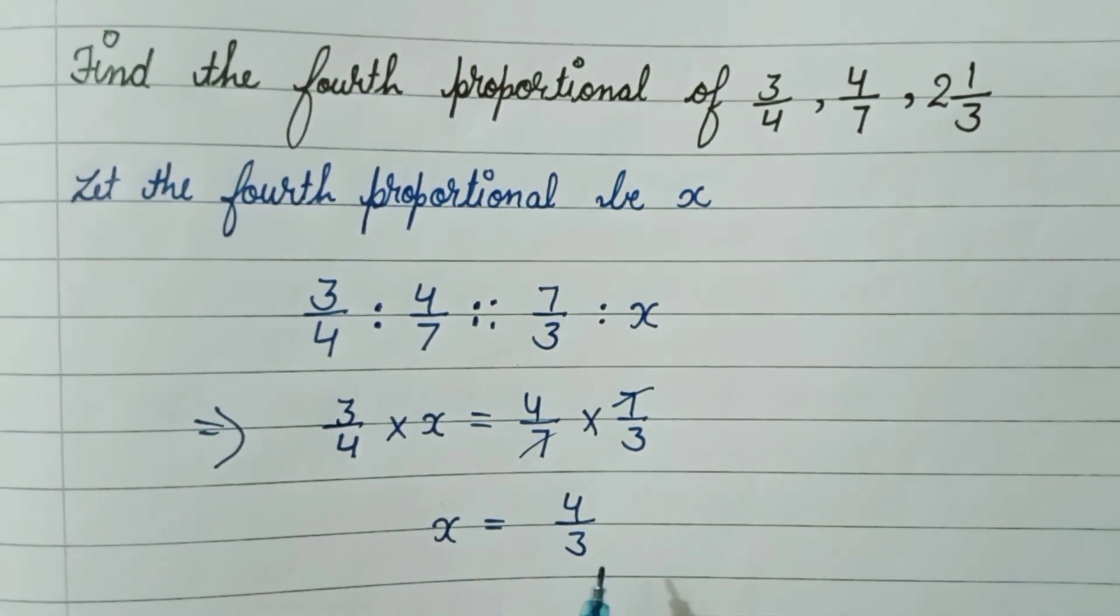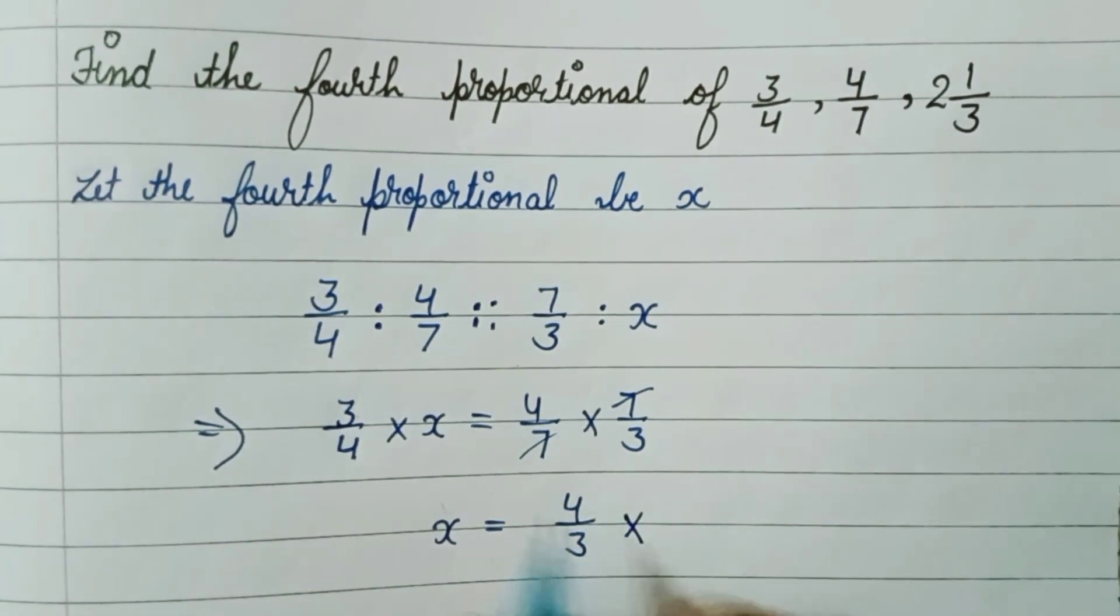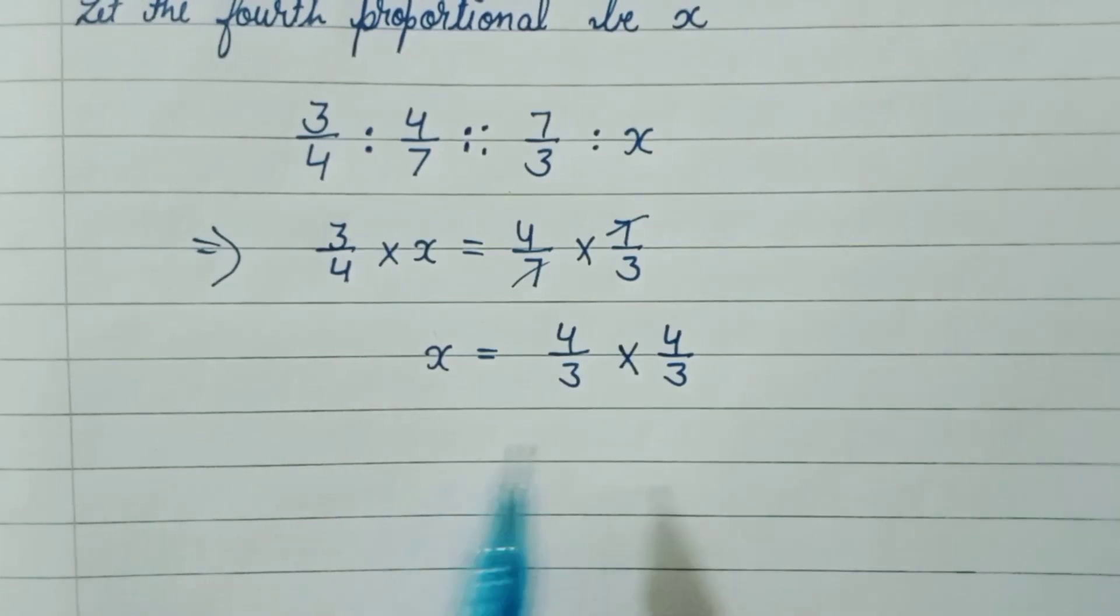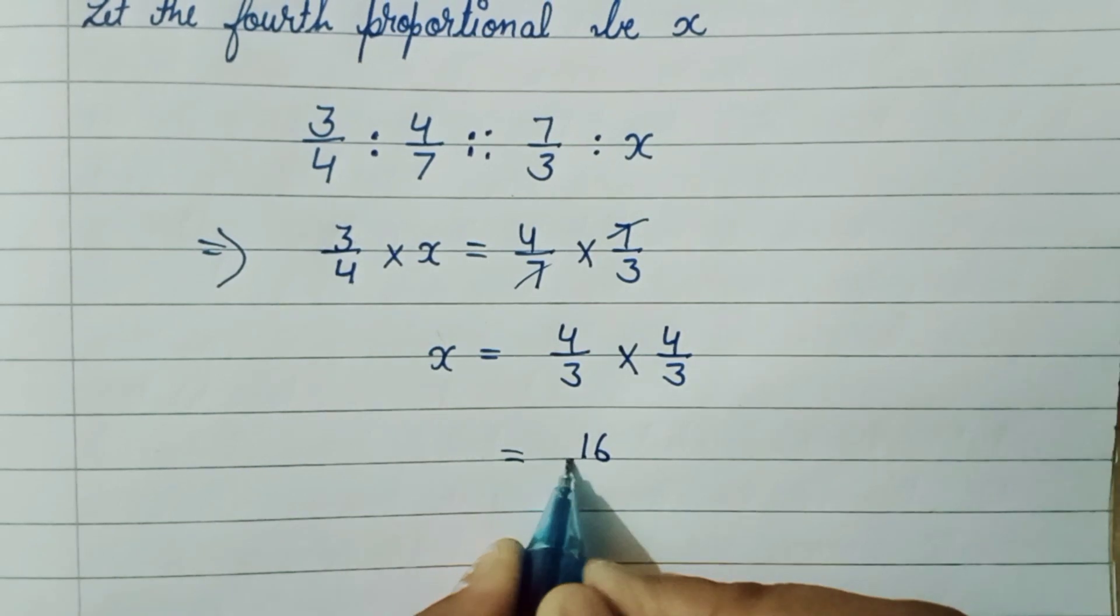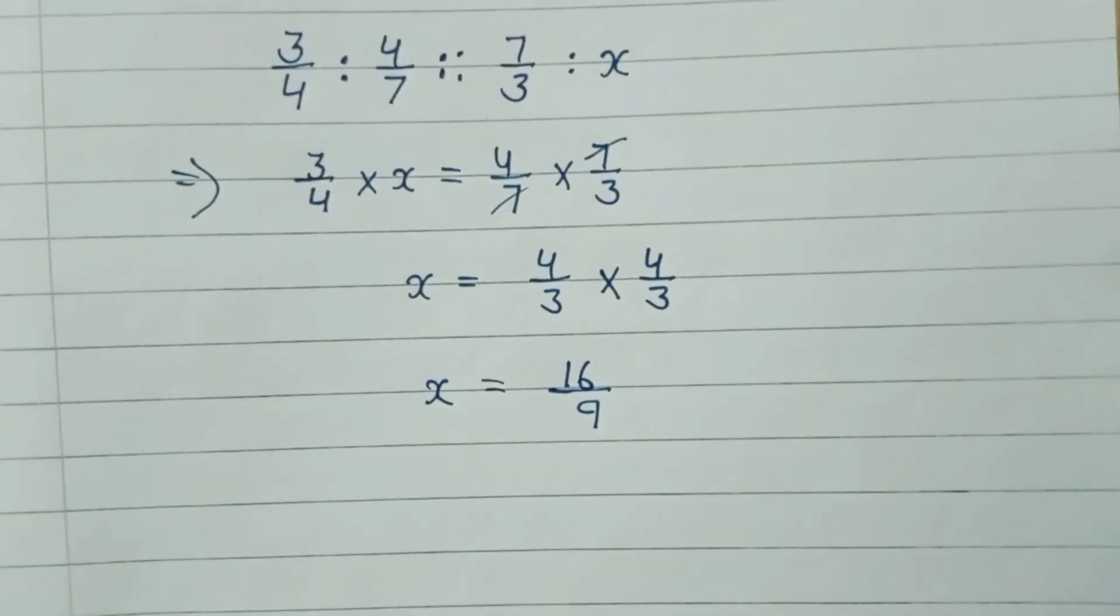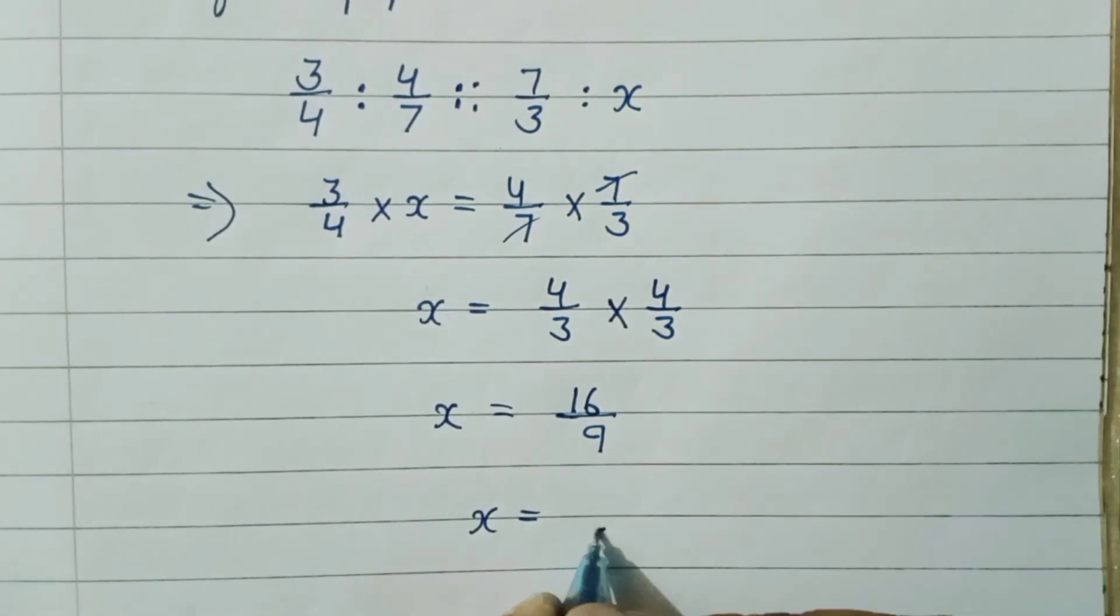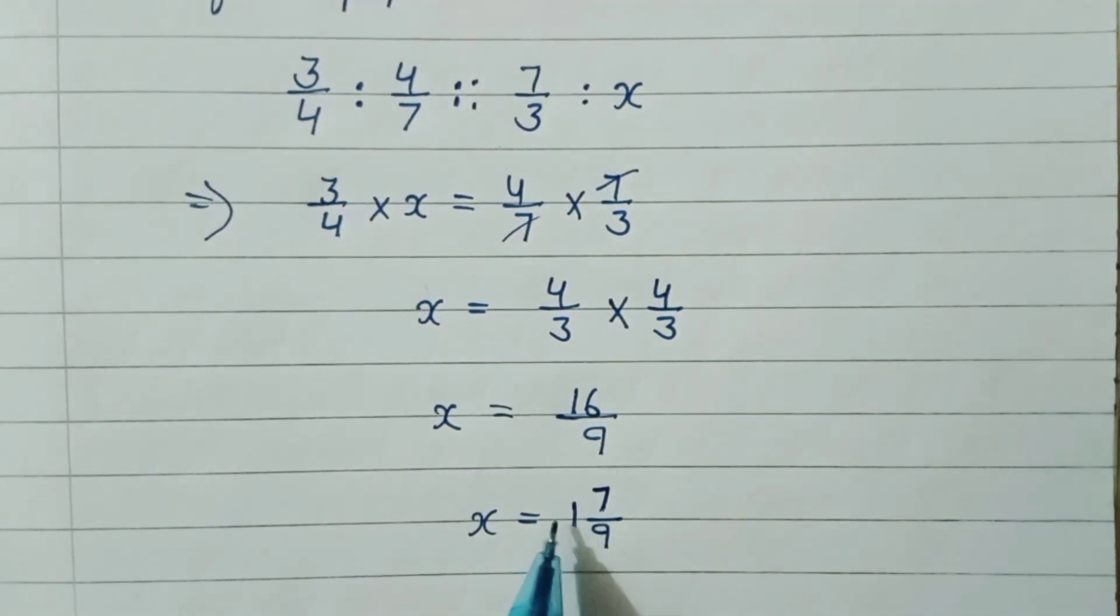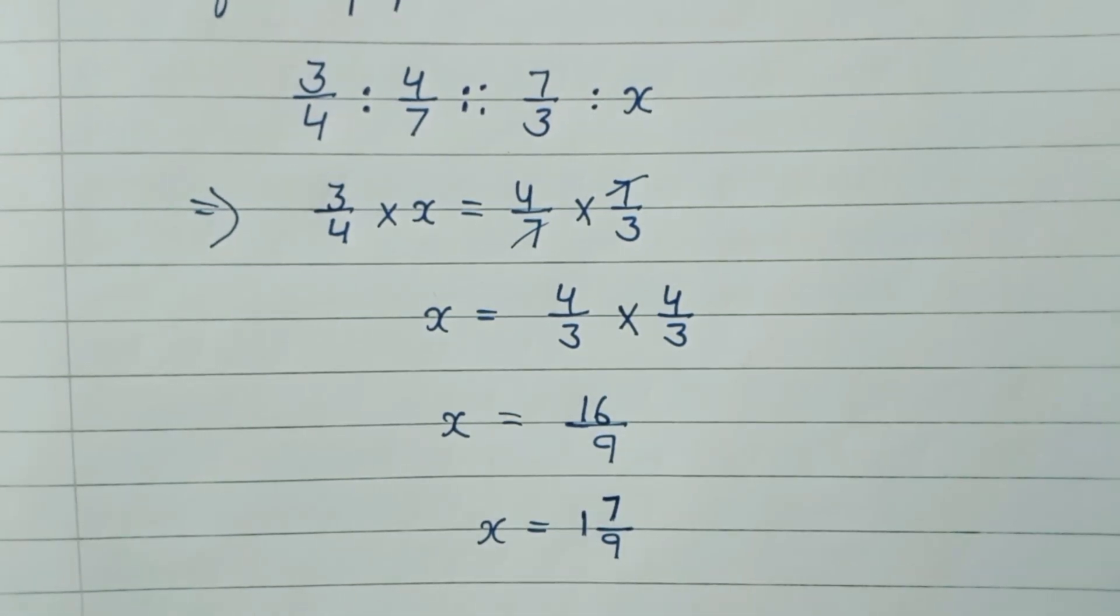When 3/4 comes to the right side in division, we multiply and it will be reciprocated, so it becomes 4/3. After this, we multiply 4 × 4, we get 16, and 3 × 3, we get 9. This is the value of x. We can also convert it into mixed fraction, so x equals 16/9, which is 1 7/9.